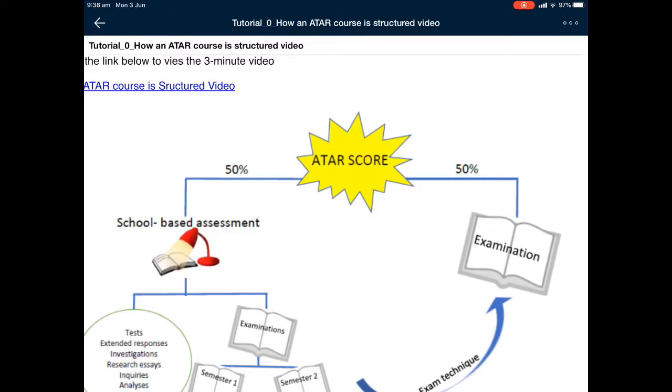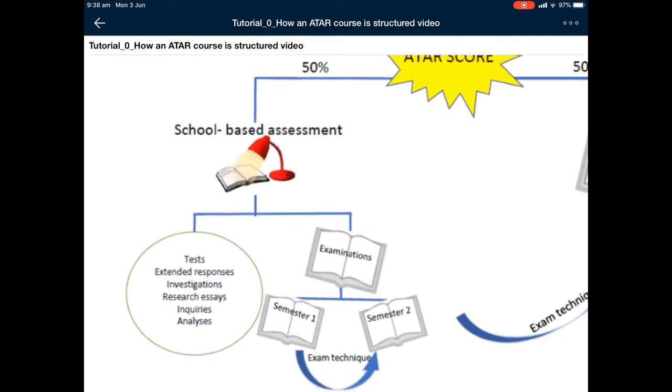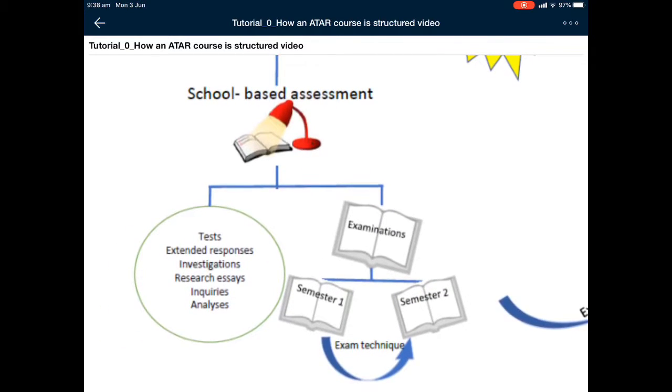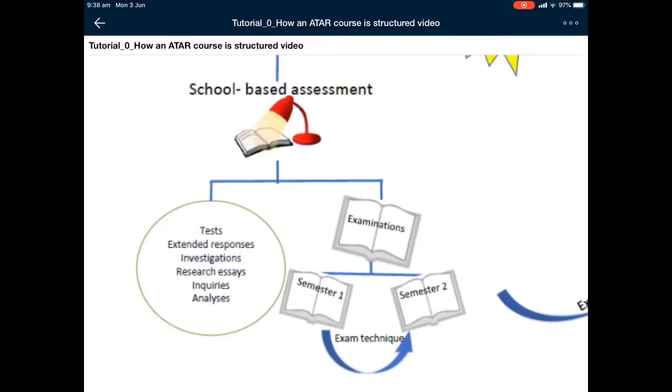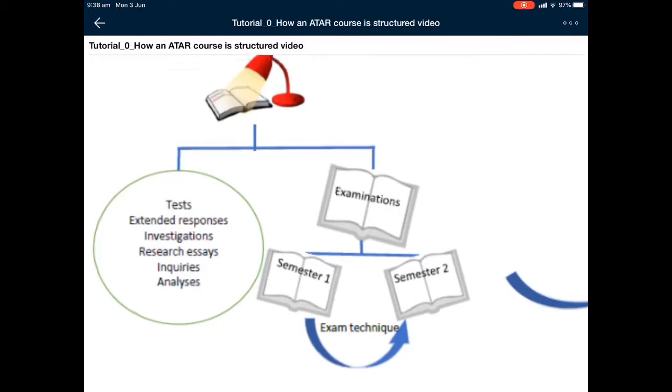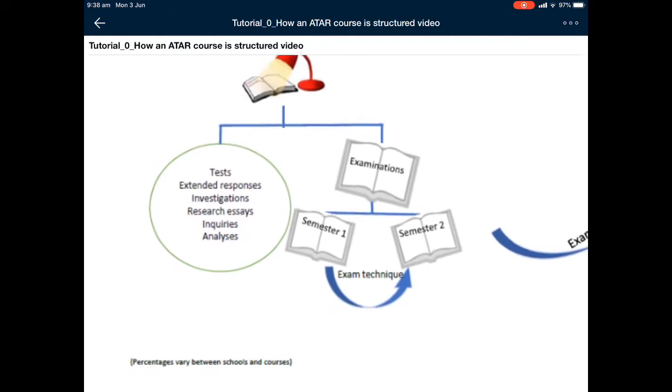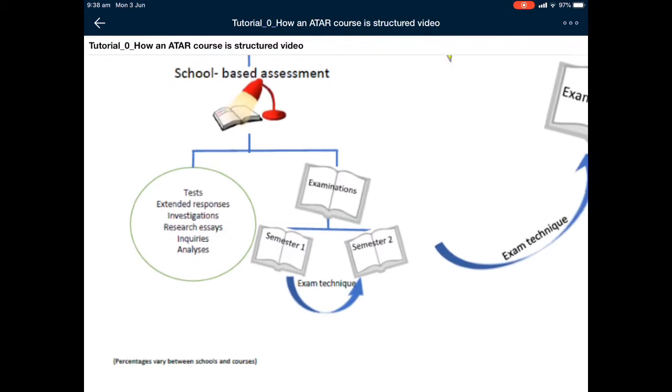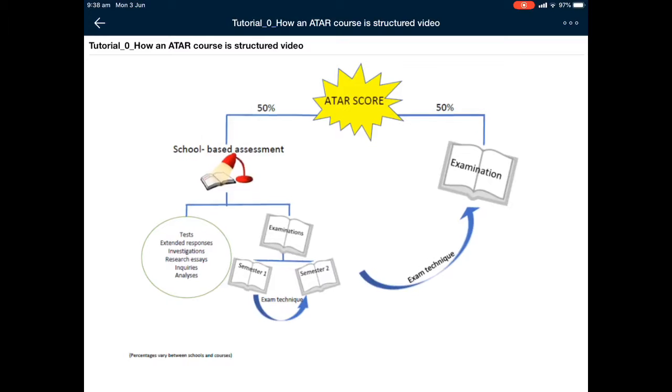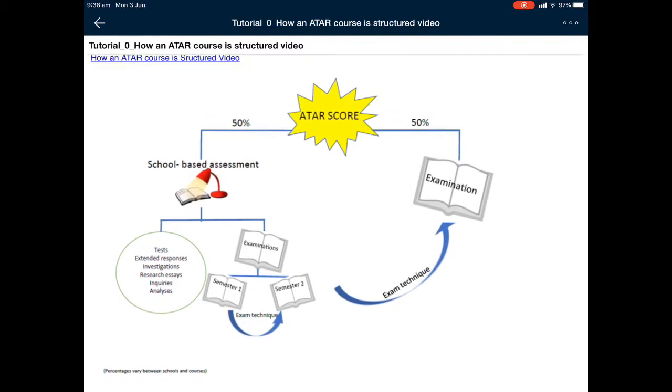It's important to look at this structure because the ATAR score is made of 50% of your school-based assessments and 50% the third external examination. But the school-based assessment is divided into roughly 50-50 tests, extended responses and investigations and then roughly 50% of that is the two internal examinations.